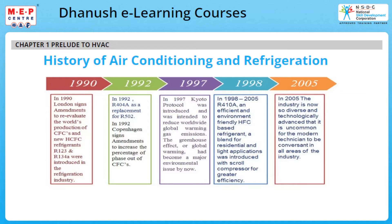In 1998–2005, R-410A, an efficient and environment-friendly HFC-based refrigerant, a blend for residential and light applications, was introduced with scroll compressor for greater efficiency. By 2005, the industry had become so diverse and technologically advanced that it is uncommon for the modern technician to be conversant in all areas. It became necessary to specialize in installation, commissioning or servicing, whether in the domestic, industrial, commercial or transport area of refrigeration and air conditioning.